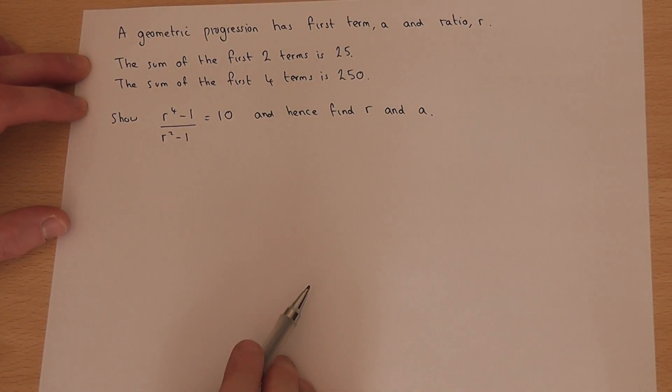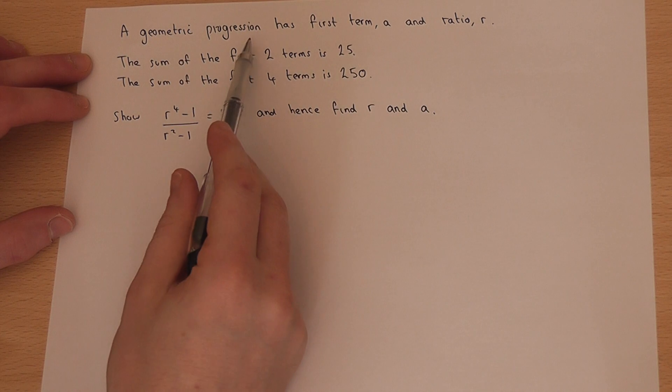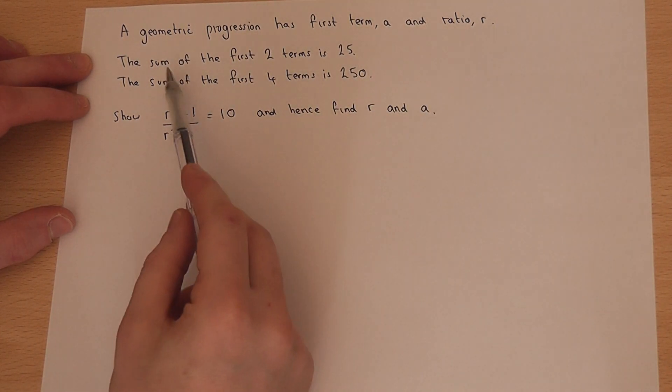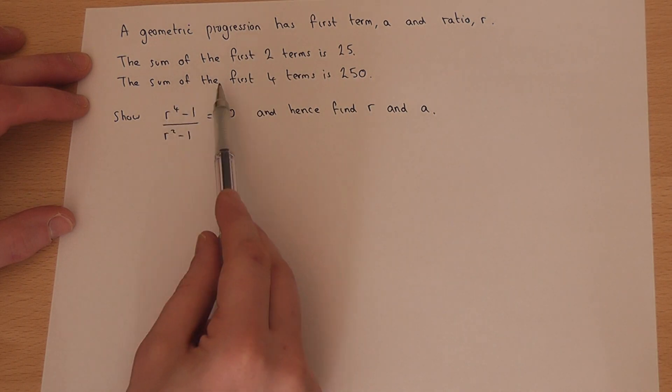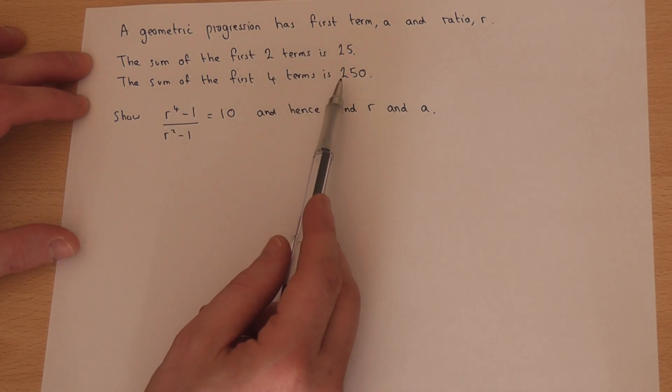This is a nice little question involving a geometric progression. We're told that the sum of the first two terms is 25, and the sum of the first four terms is 250.